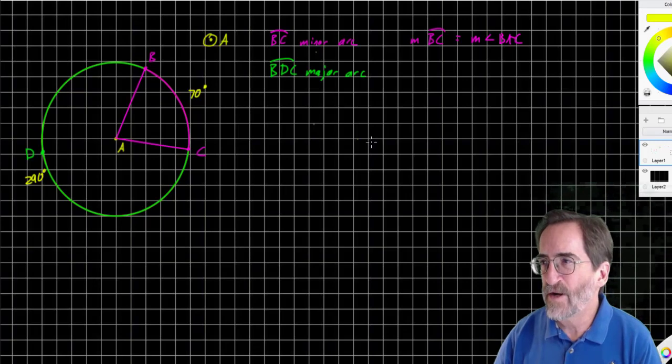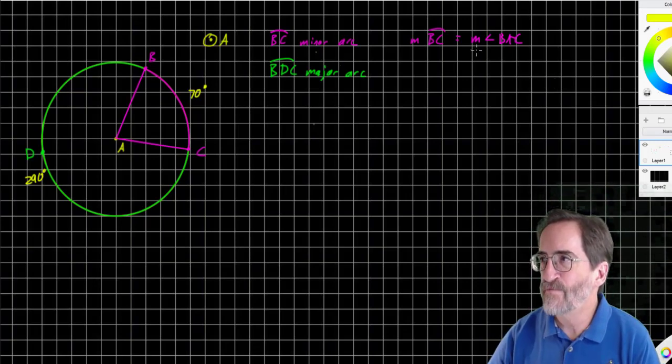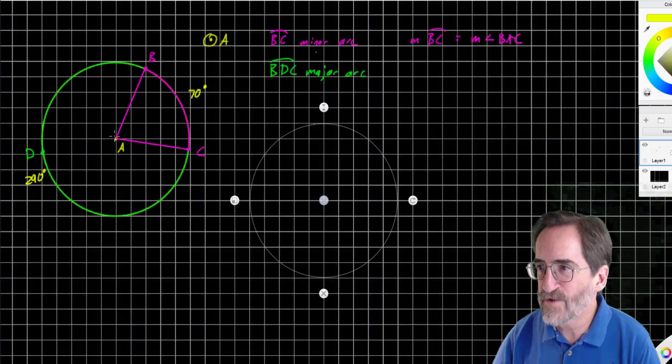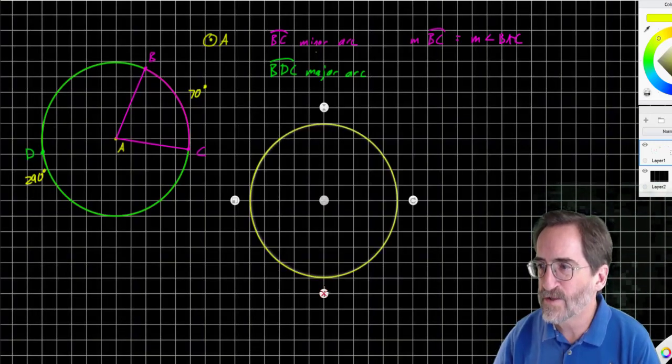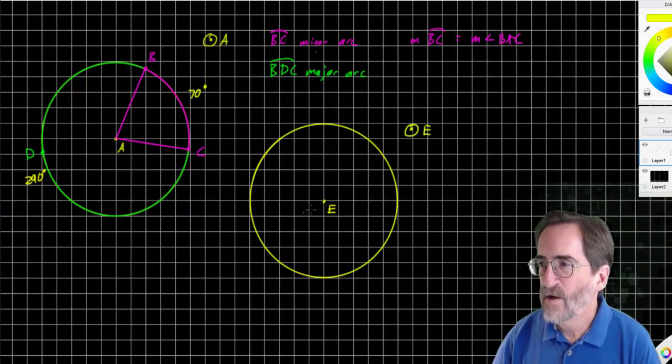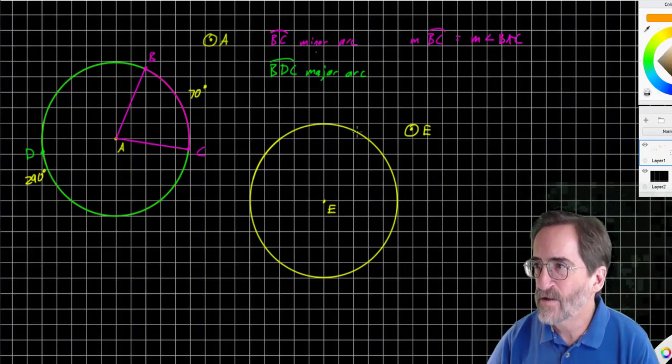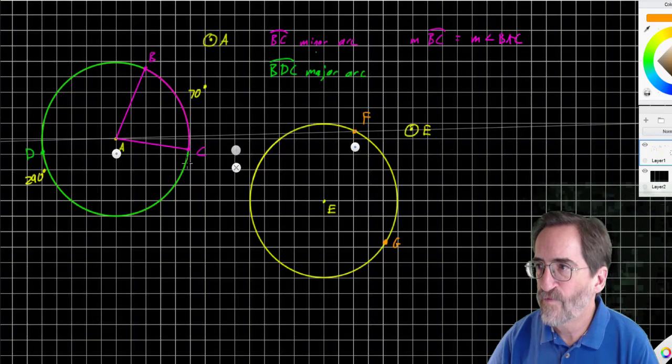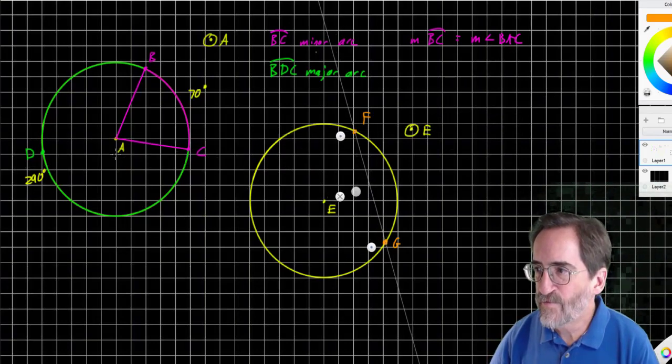Now there's another thing about circles. We can also talk about something called a chord. A chord, if we call this circle E, can be thought of as a connecting line segment between any two points on the circle. So F and G, segment FG is a chord.